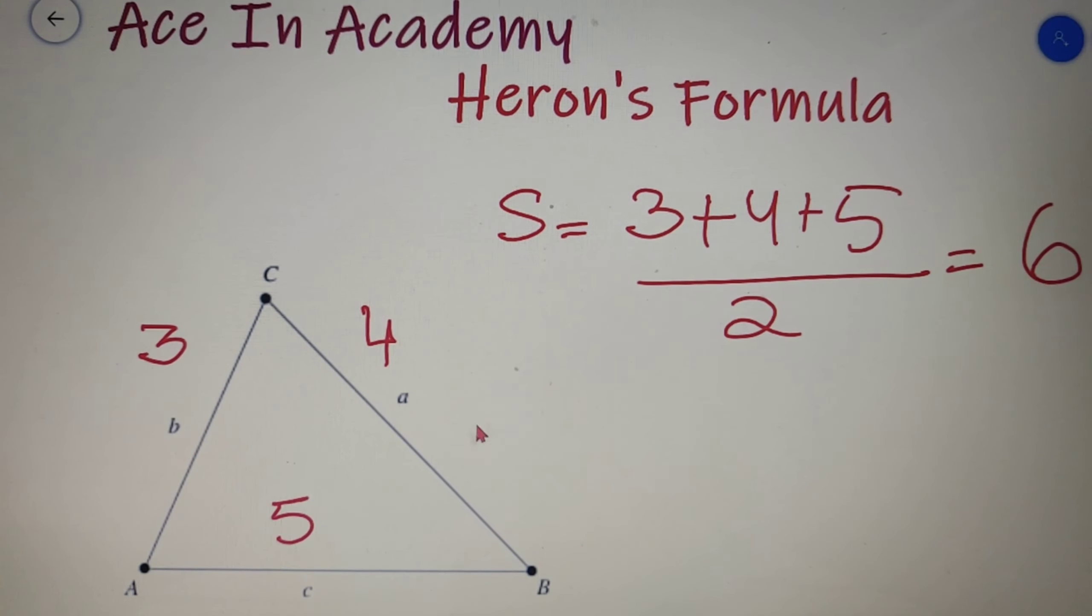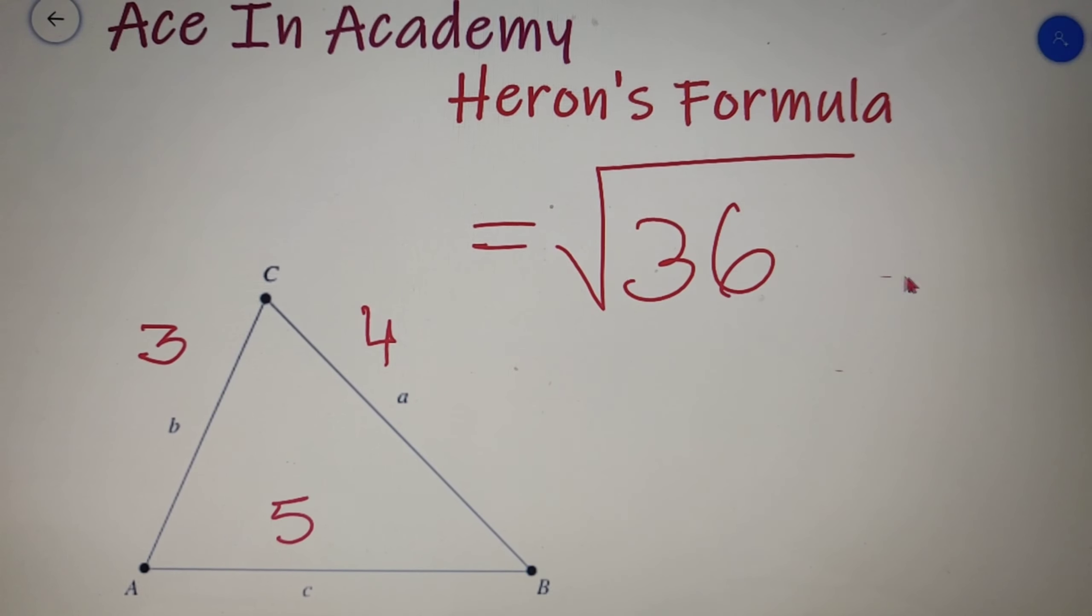Now we know the semi-perimeter so we can easily put it in the formula. Upon putting the values we will get 6 into 6 minus 3 which is 3, 6 minus 4 which is 2, and 6 minus 5 which is 1. Upon multiplying you will finally get the value as under root of 36, which is equal to 6 units. So the area of our given triangle is equal to 6 units.